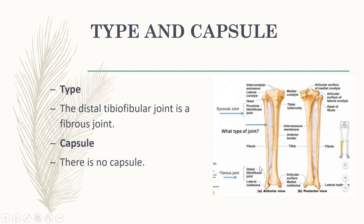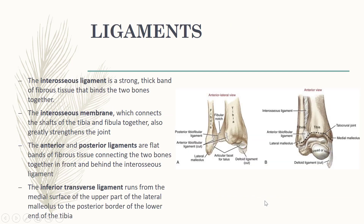The distal tibio-fibular joint is a fibrous joint. Here you can see the distal tibio-fibular joint — it is a fibrous type of joint. There is no capsule at the distal tibio-fibular joint.